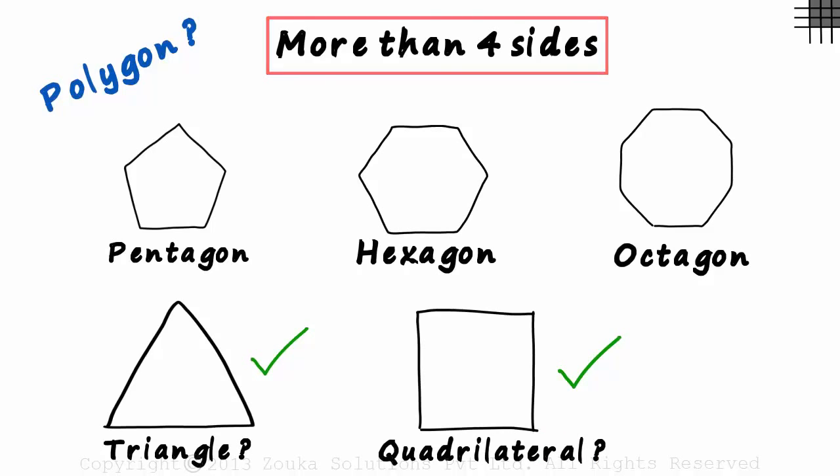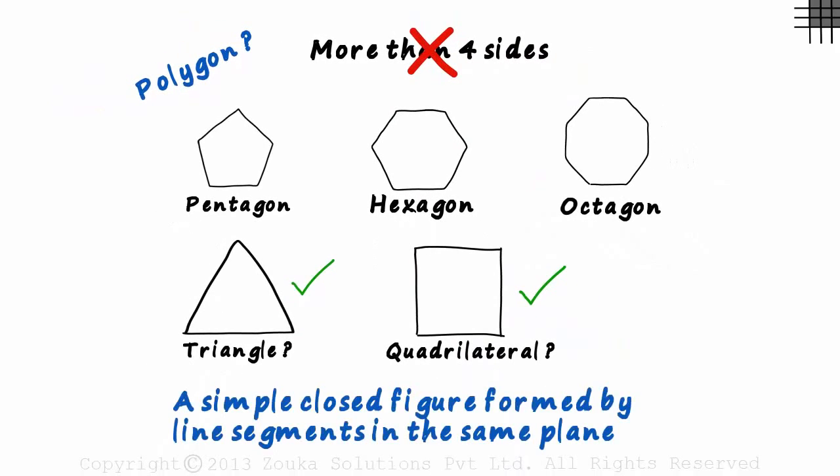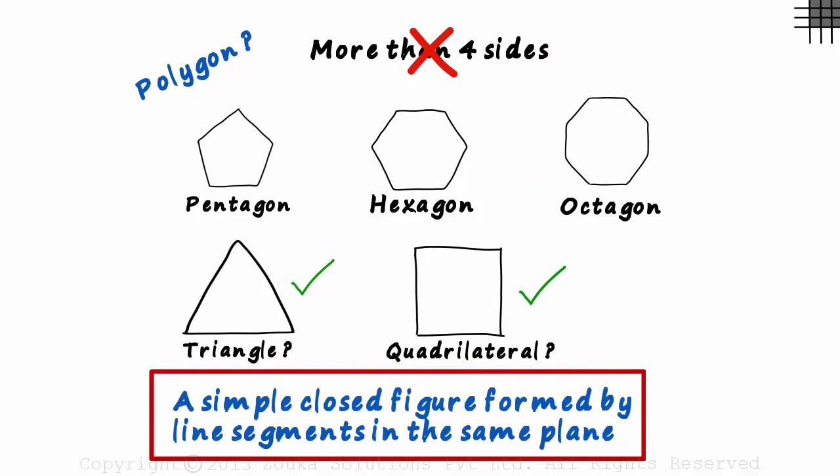Which would mean this definition is wrong. This is the definition of a polygon. It's a simple closed figure formed by line segments which are in the same plane.